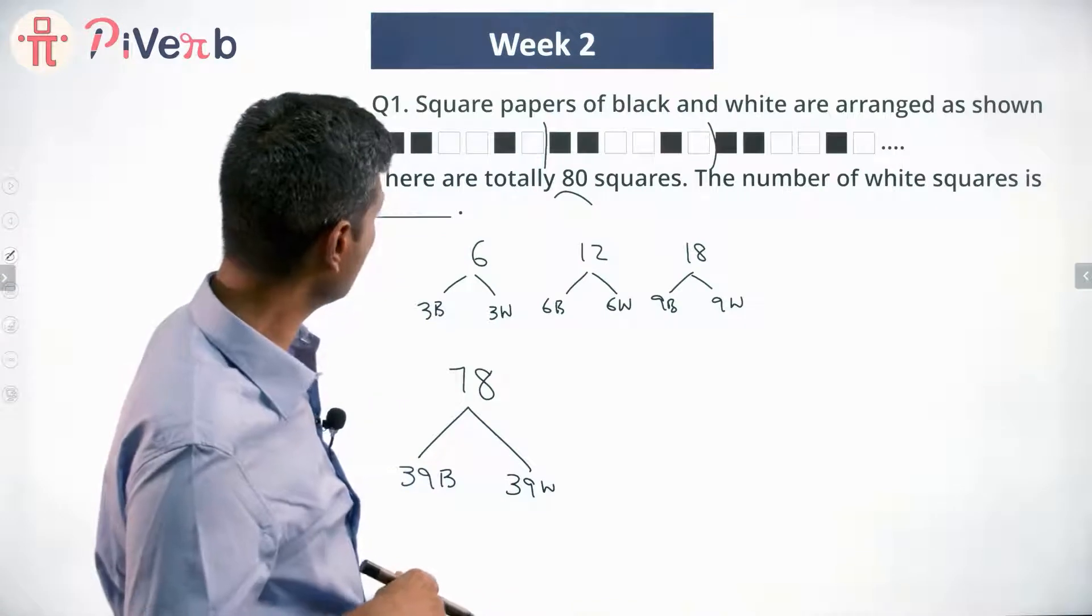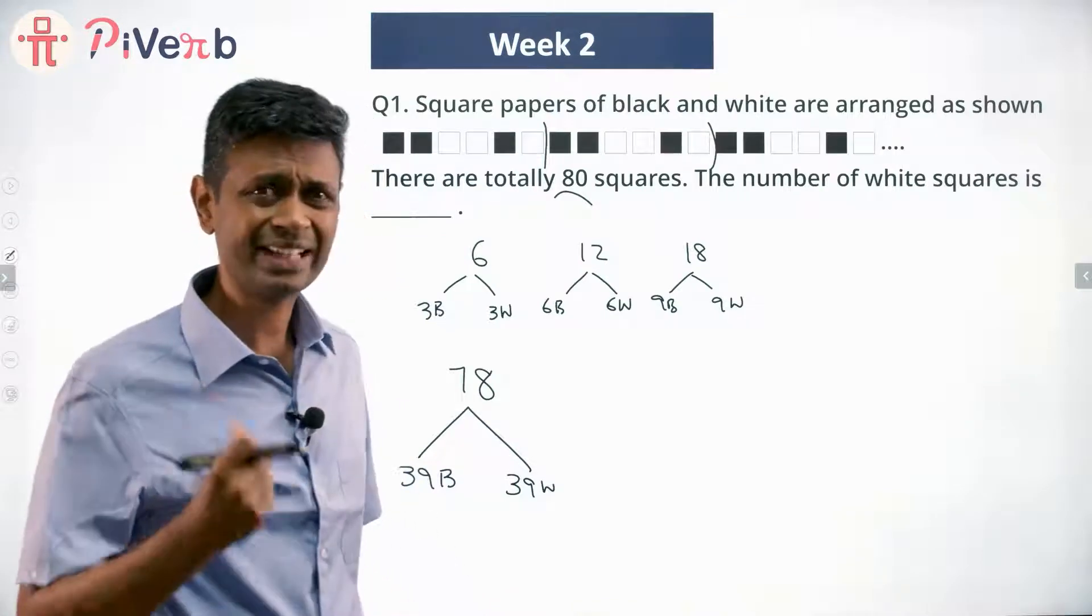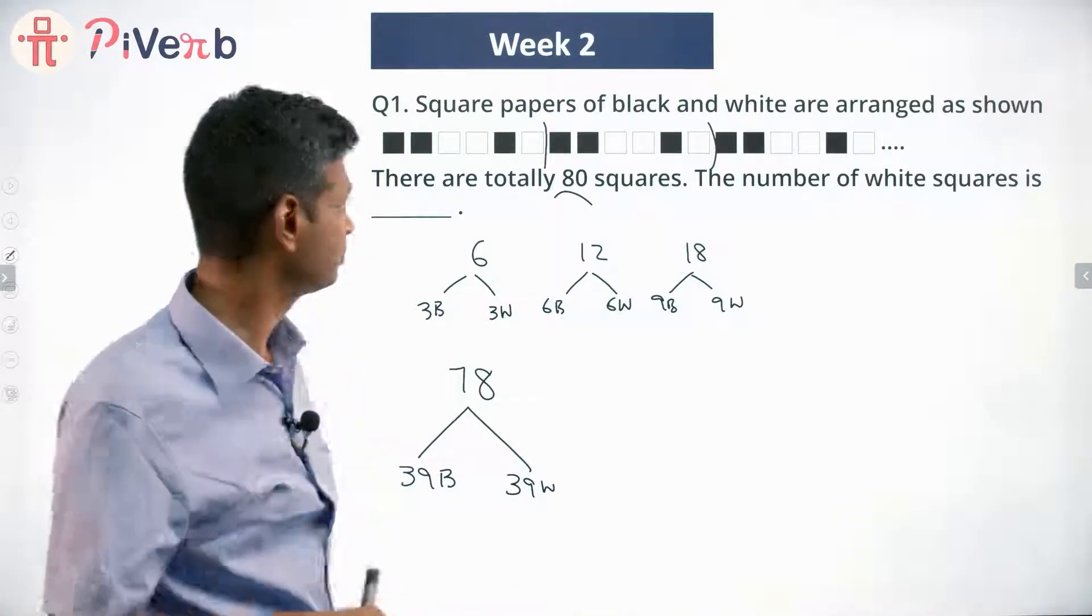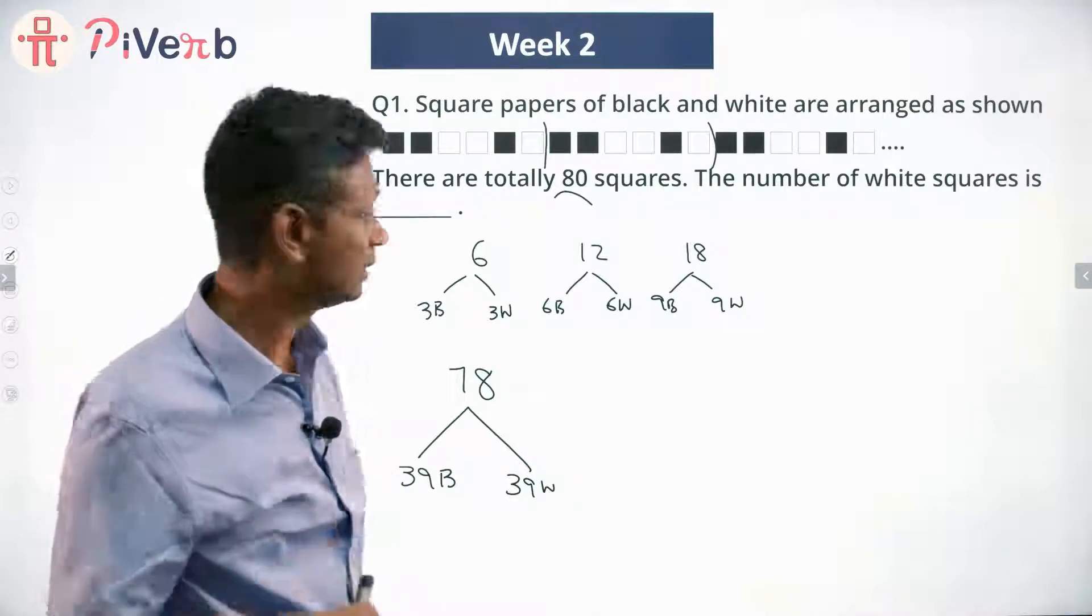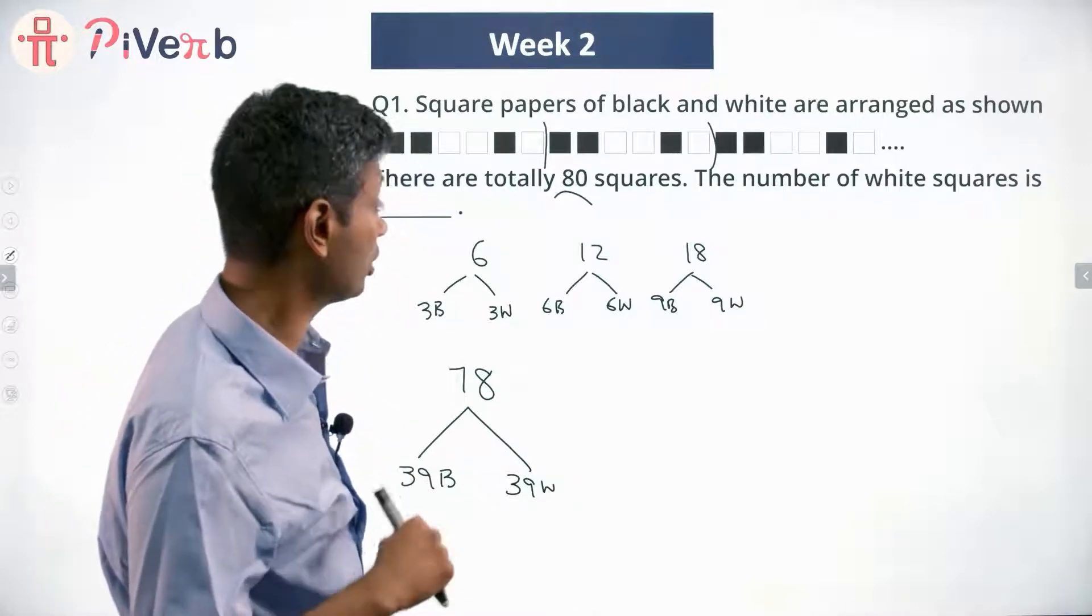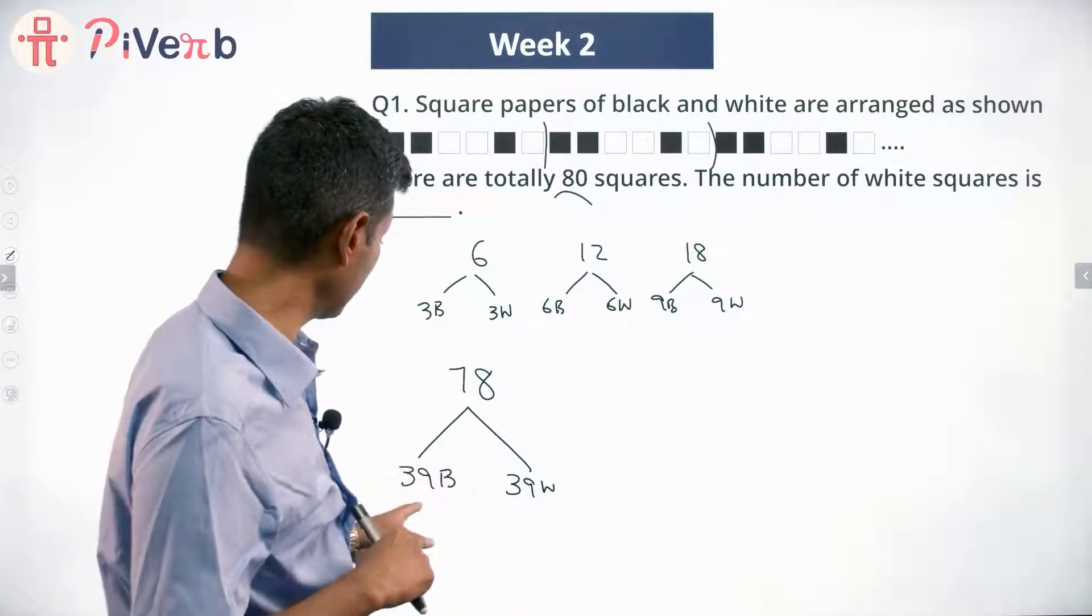So we completed 13 cycles quite wonderfully. All done. But that means you've gone till square number 78. 79 and 80 are remaining. So the number of white squares we need to find. Till 78, there are 39 black and 39 white.